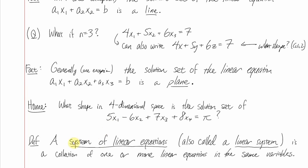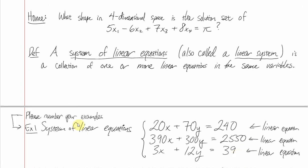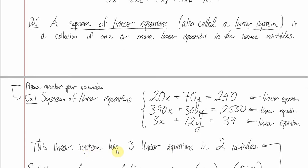The main object of study in this section is a system of linear equations — often called a linear system for short — which is just one or more linear equations in the same variables. Here's an example we looked at on the first class day: three linear equations in the same variables x and y. This is a linear system with three equations and two variables x and y.